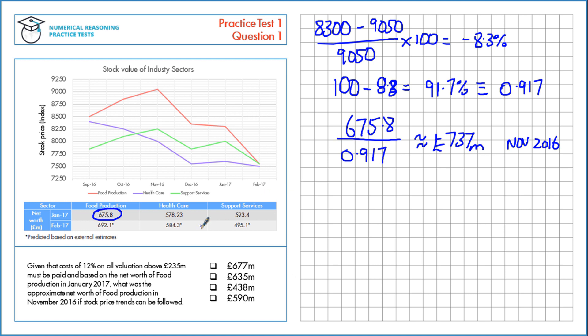Now we need to consider the cost of valuation. We were told the cost of 12% on all valuation above 235 million must be paid, so let's find how much this exceeds 235 million by: 737 take 235, that's 502 million.